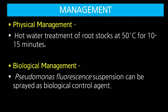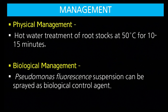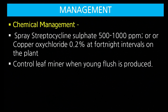Physical management: hot water treatment of rootstocks at 50°C for 10 to 15 minutes — this kills the bacteria present inside. Biological management: apply biocontrol agent Pseudomonas fluorescens by spraying in the orchard. Chemical management: spray Streptocycline sulfate 500–1000 ppm along with copper oxychloride 0.2% at 15-day intervals. Also control leaf miner when young flush is produced.